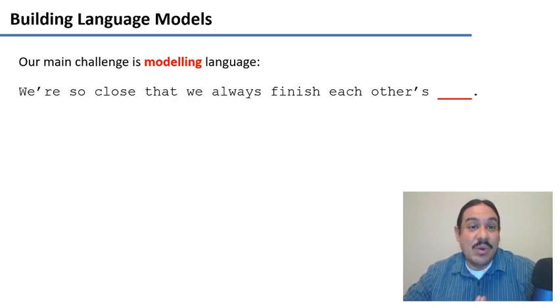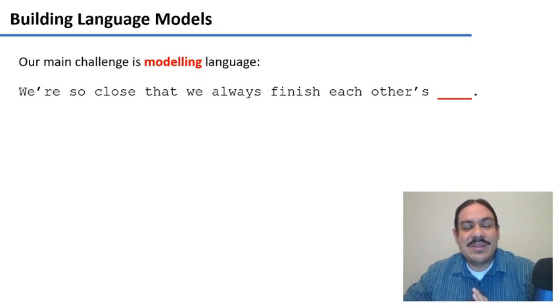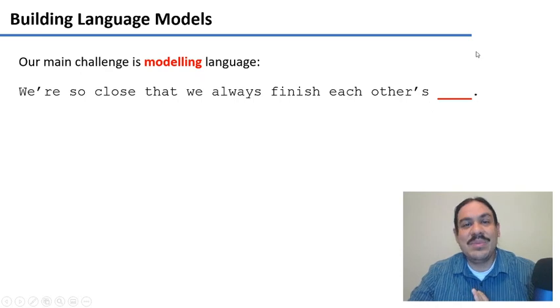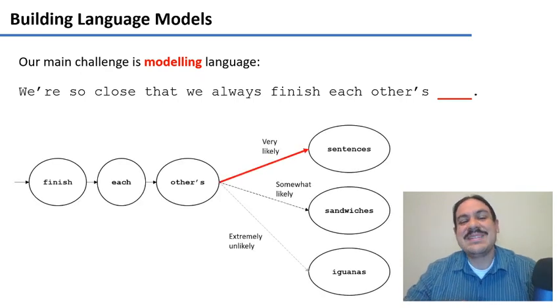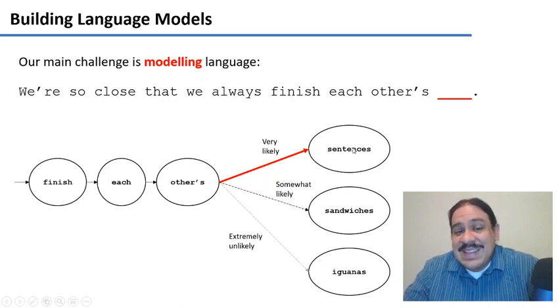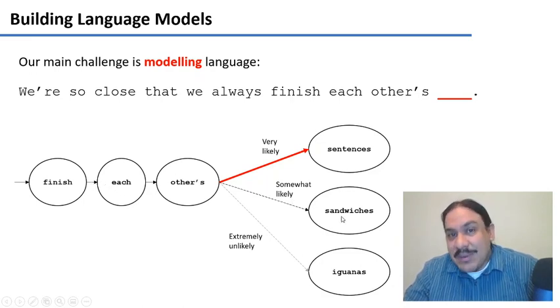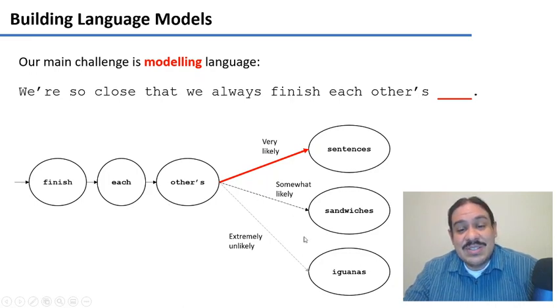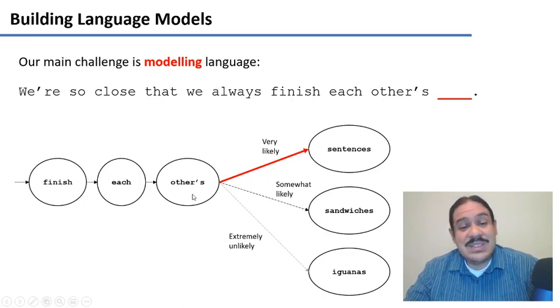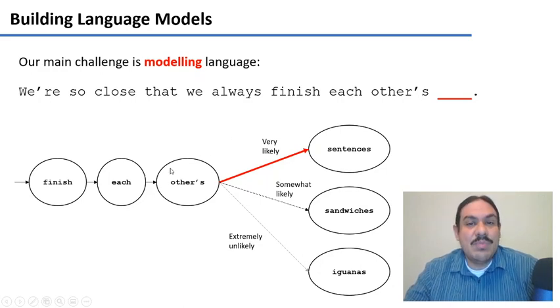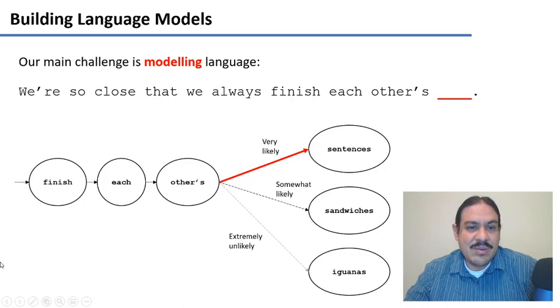We can use these sequences, for example, to predict the following word. Please pause the video and take a look at this sentence. What is the word that goes in the red line? Please pause the video. We're so close that we always finish each other's. So you know that we very likely said that you finish each other's sentences. Maybe if you know the joke from movies and TV, you say that you finish each other's sandwiches. But I bet you none of you said that you would finish each other's iguanas, for example. So a model needs to understand that it is very likely that this sequence of words will lead to sentences, that it could sometimes lead to sandwiches, and that it's almost never going to lead to iguanas. This is a language model. And notice that we're doing the model by looking at words that are adjacent to one another and sounds that are adjacent to one another.